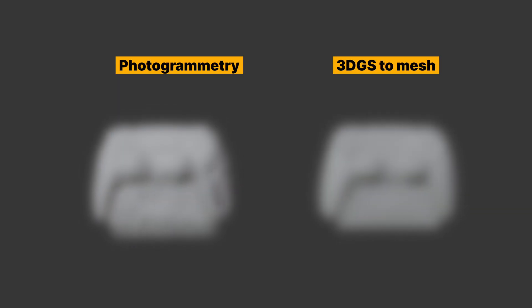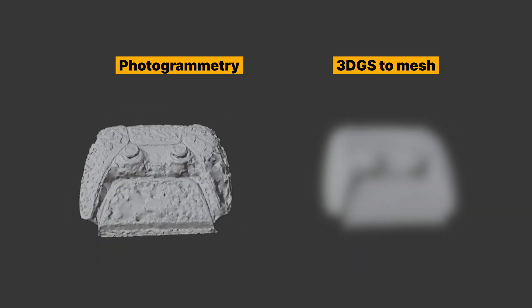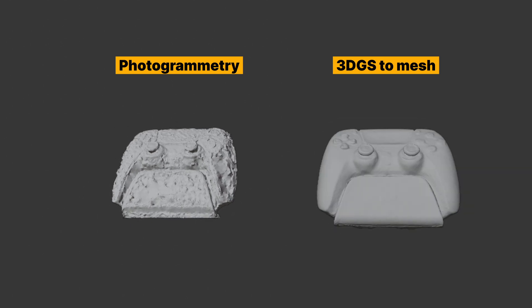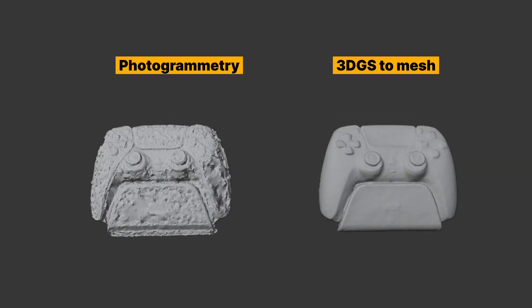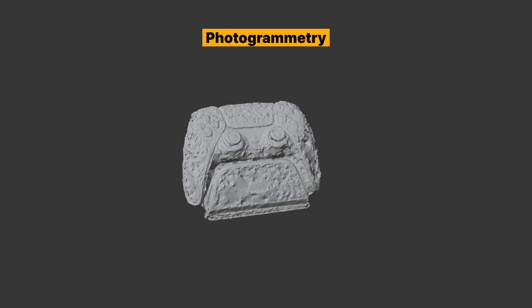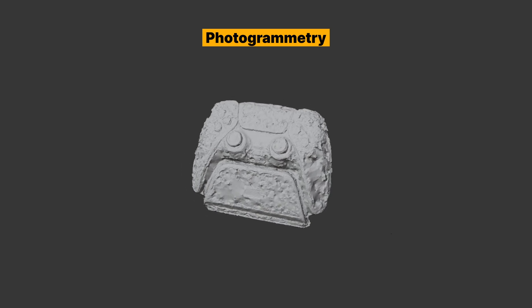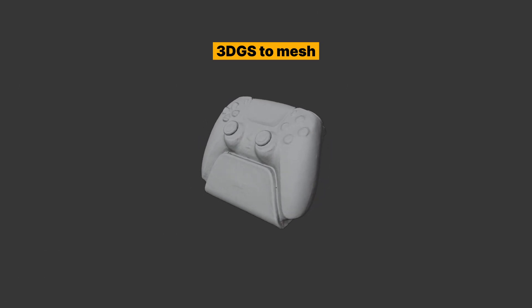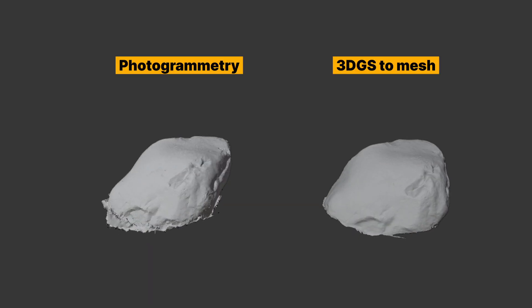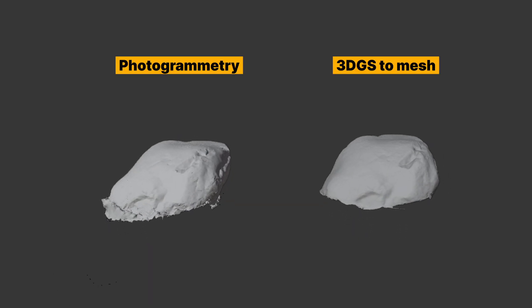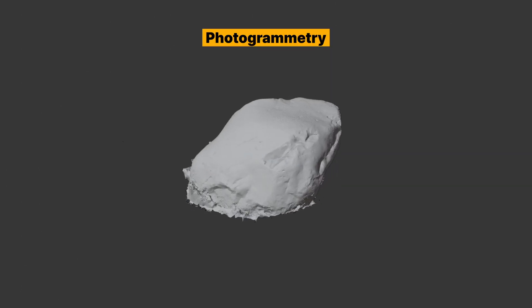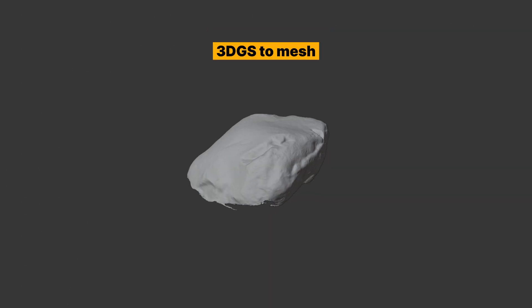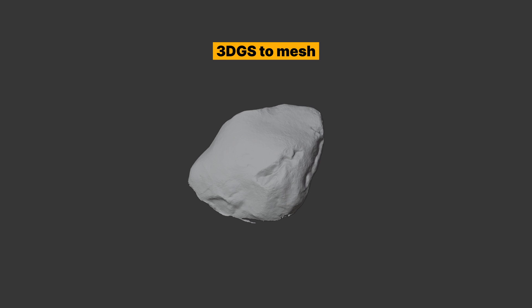Let's start with the controller scan. This one is from photogrammetry, and this is from 3D GS2 Mesh. Because of its lack of rich texture, the mesh quality from photogrammetry is very poor, but our 3D GS2 Mesh did a pretty good job of making the surface smooth. And this is the rock scan. Because it has very rich texture, the photogrammetry quality is very good — but the 3D GS2 Mesh isn't that bad either.